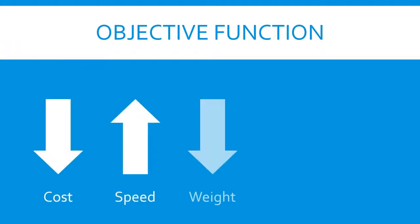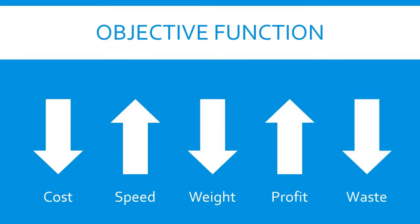Optimization problems are commonly written in the form minimize f. Here f is the objective function. Other examples of objective functions might be to minimize cost, maximize speed, minimize weight, maximize profit, or minimize waste. The specific objective function chosen depends on the problem to be solved and your goals in solving it.